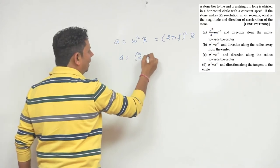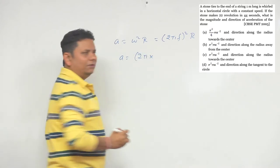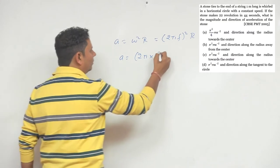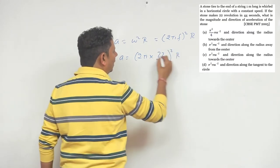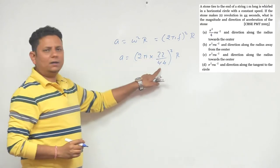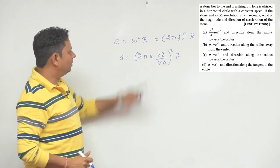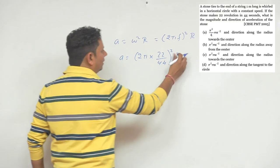The value of f is 22 revolutions divided by 44 seconds. So we have (2π × 22/44)² × r. The 22 and 44 cancel to give 1/2, the 2 cancels, and r is 1 meter.